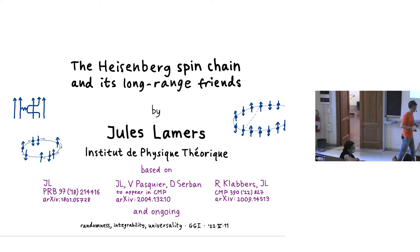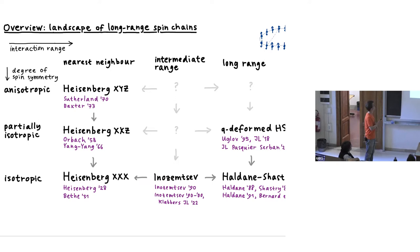The big landscape I like to show is this one here. On the left column we find the Heisenberg spin chains. It comes in three levels: the isotropic version, the Heisenberg XXX model; then the partially isotropic version, XXZ; and then the totally anisotropic model, which is the XYZ. The further you go down, the more spin symmetry there is.